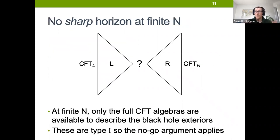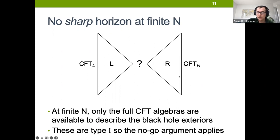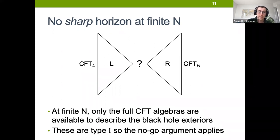Why does this tell us that at a finite number of degrees of freedom we can't have a sharp black hole horizon? At finite N, the only algebra available to describe the full exterior is the full CFT algebra. The full algebra of operators in the CFT is of type I, which means those kinds of projectors do exist, so the no-go argument applies and we can't have this sharp horizon. We can't have these commutators being exactly zero and then switching on to be nonzero.